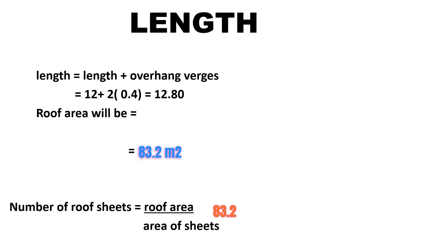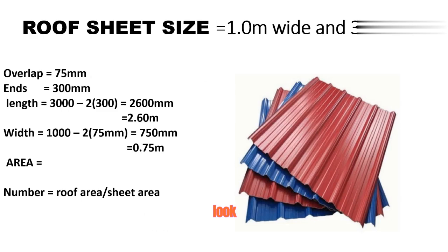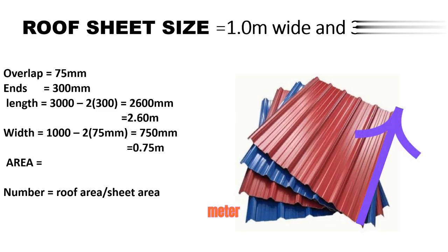The roof area will be 12.80 meters by 6.50 meters, which gives us 83.2 square meters. Now the number of roof sheets will be the roof area divided by the area of one sheet.